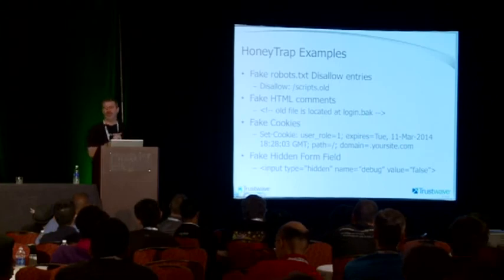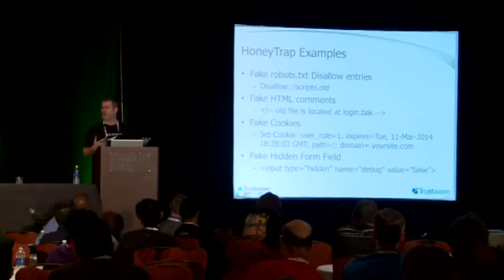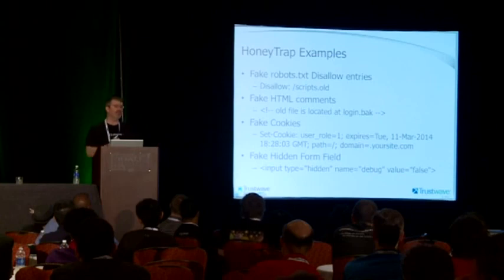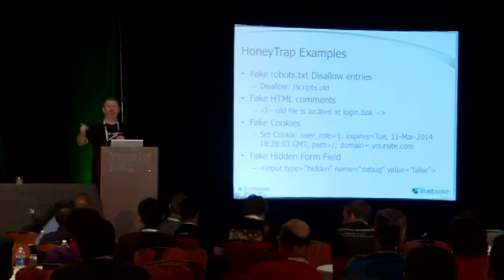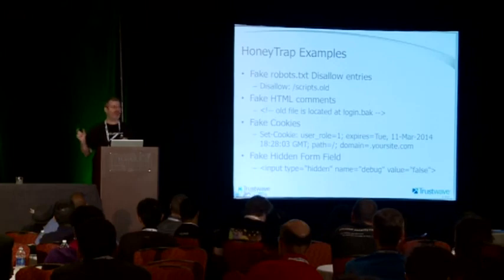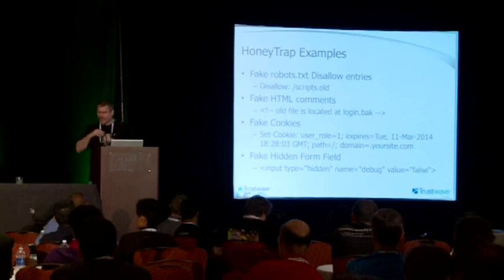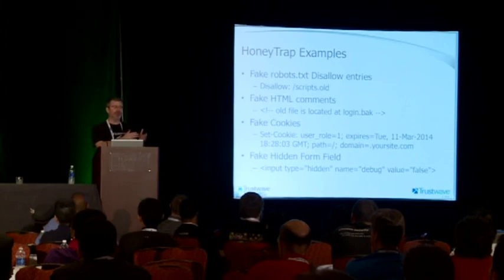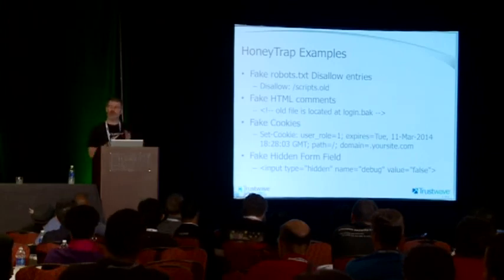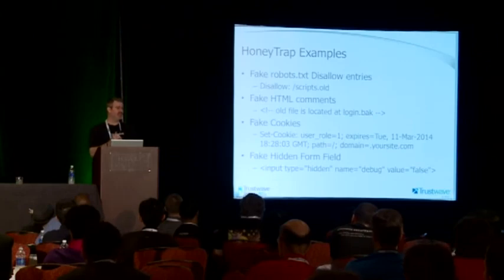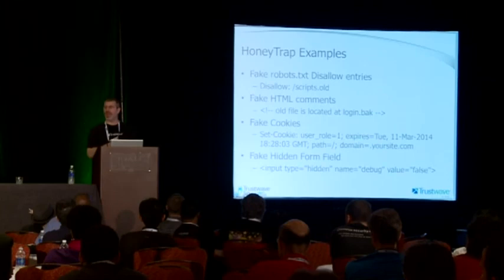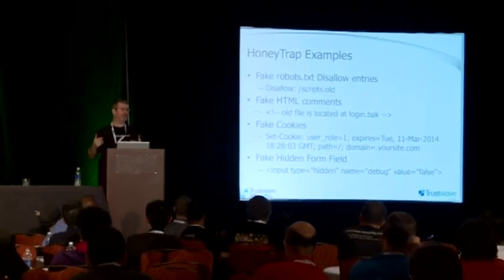The next one is HTML comments. Attackers typically look through the source code on your pages and tools will flag HTML comments as things to investigate. When stuff goes through development, QA, and staging into production, you'll find interesting debug code in HTML comments — things like 'if you want debug output, toggle this bit, add a parameter called debug on' — and the application acts differently. When it gets promoted to production, somebody forgets to strip that data out. Bad guys will see that and have a new attack vector.